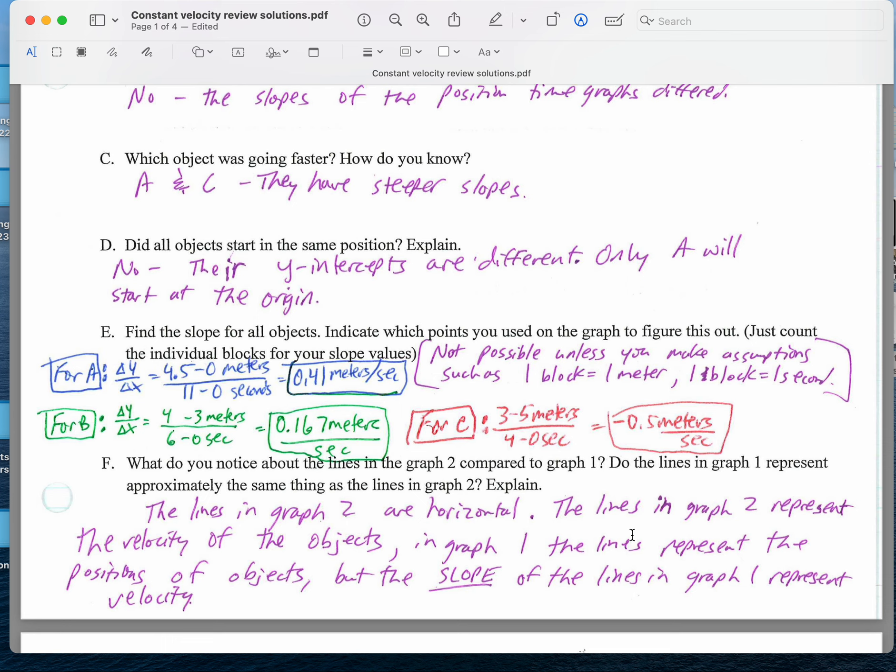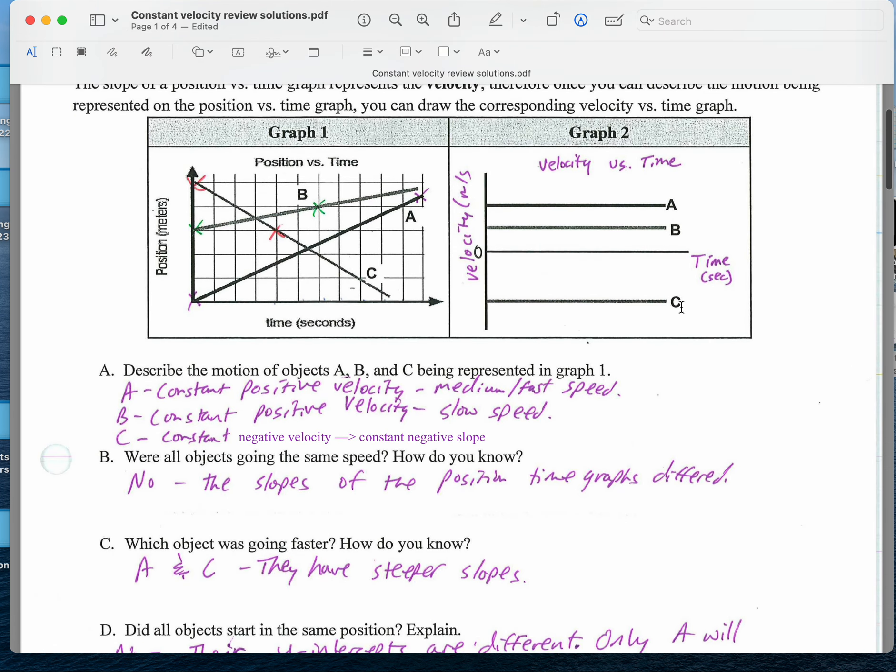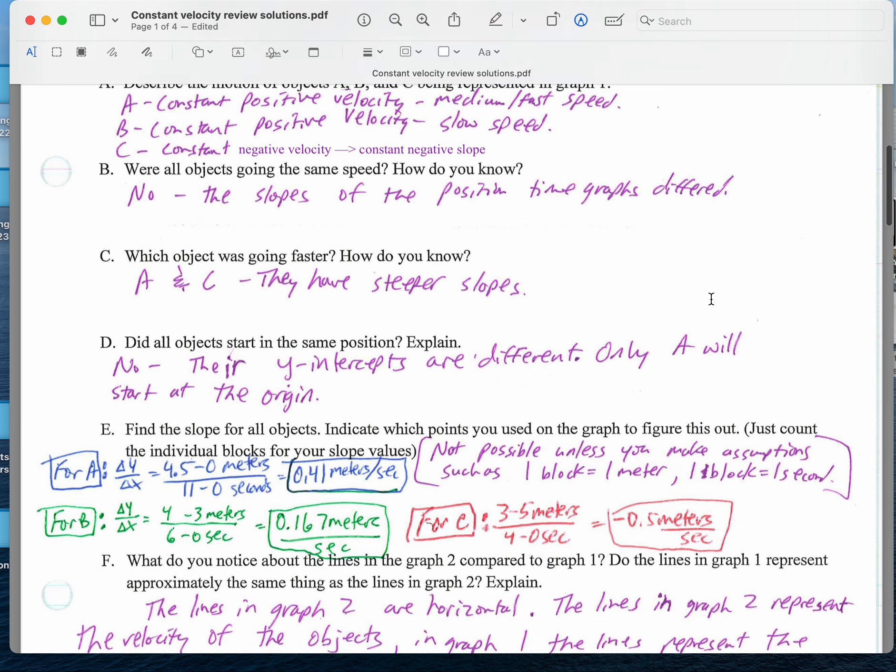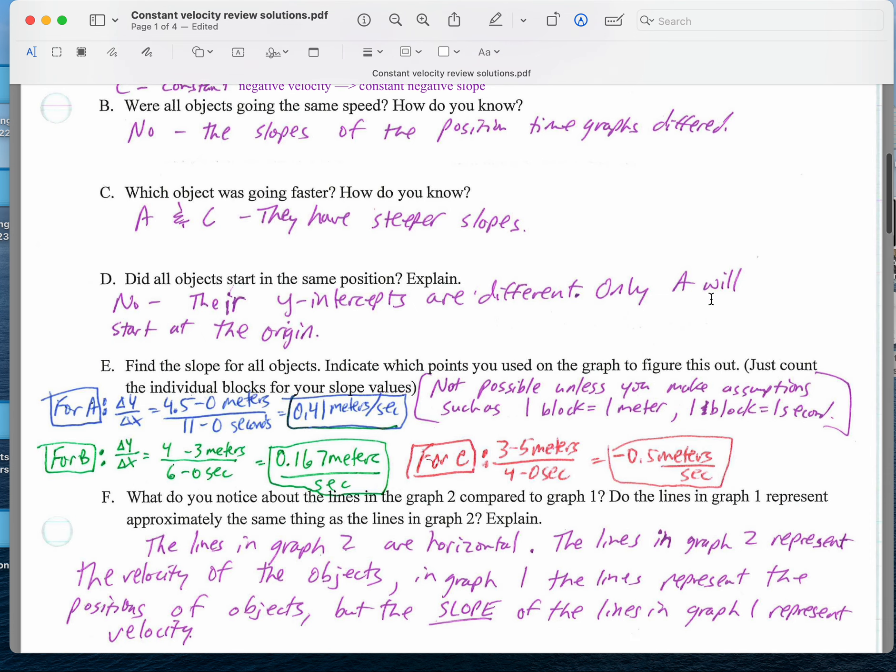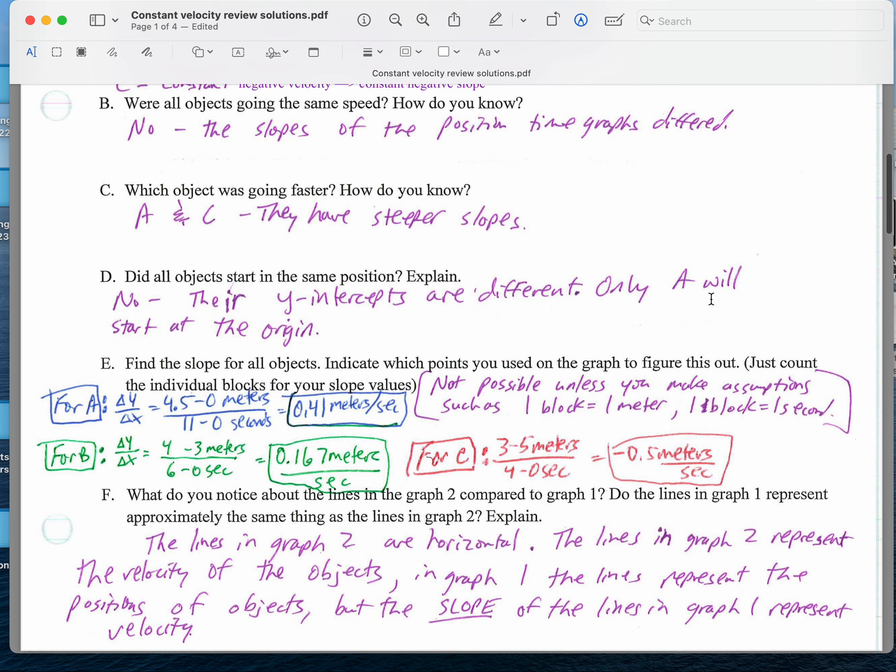What do you notice about the lines in graph 2 compared to line 1? Well, these are all horizontal. This is a velocity graph. So this agrees that this has a constant positive velocity. This has a constant positive velocity. C has a constant negative velocity. The lines in graph 1 represent the positions of the objects. The lines in graph 2 represent the velocities. So the slope of the lines in graph 1 also represent velocity.